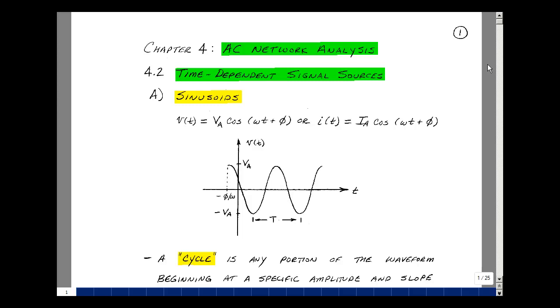This lesson deals with time-dependent signal sources. You can find these notes in the course e-book in Chapter 4, starting on page 1. In this chapter, we're going to describe AC circuits with cosine functions. These are referred to as sinusoids in general.